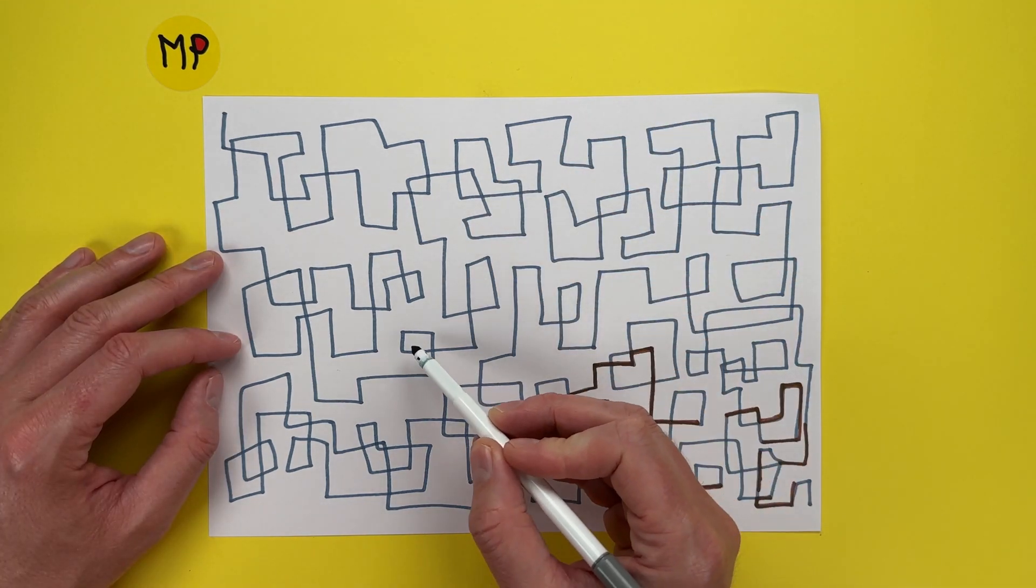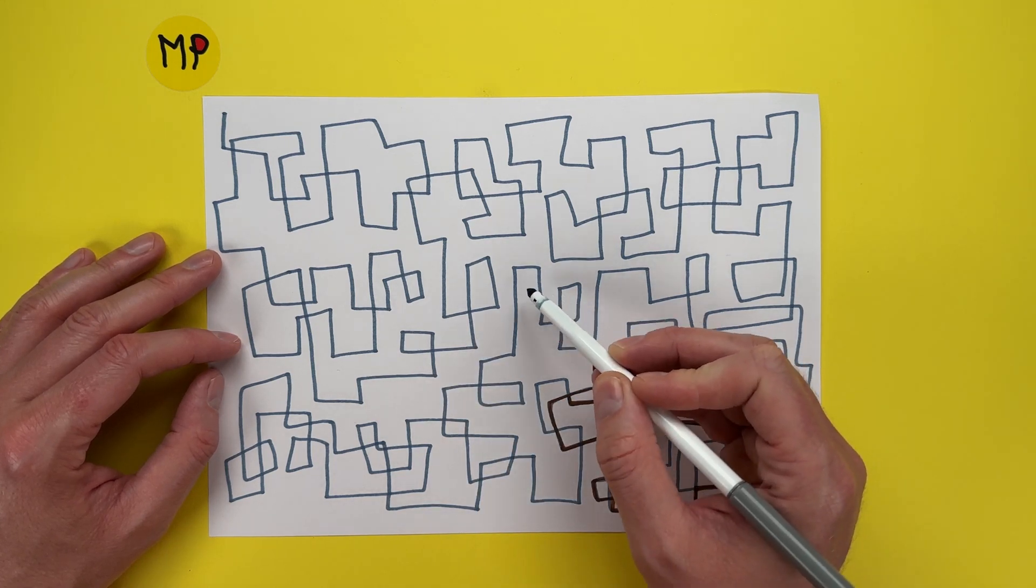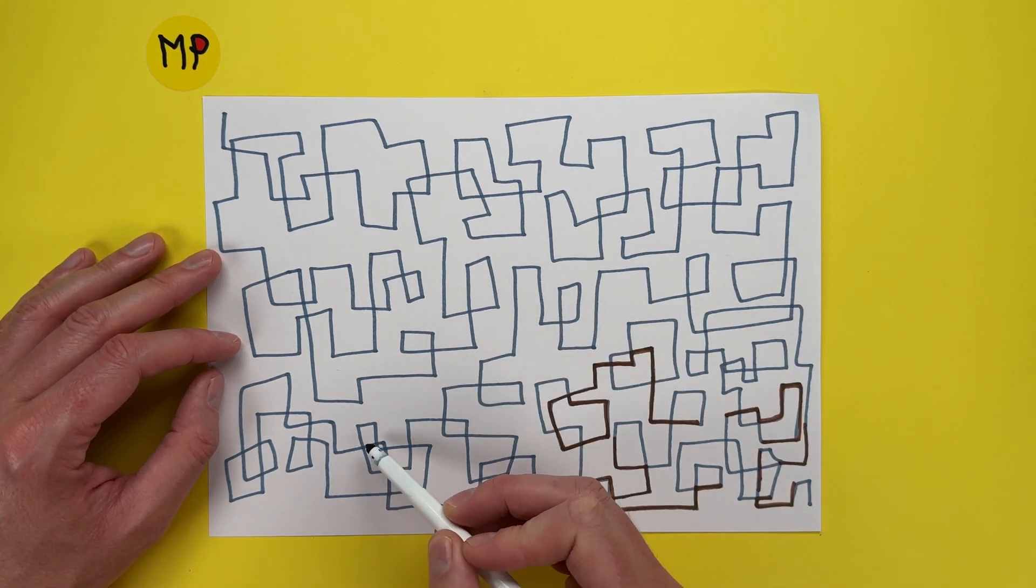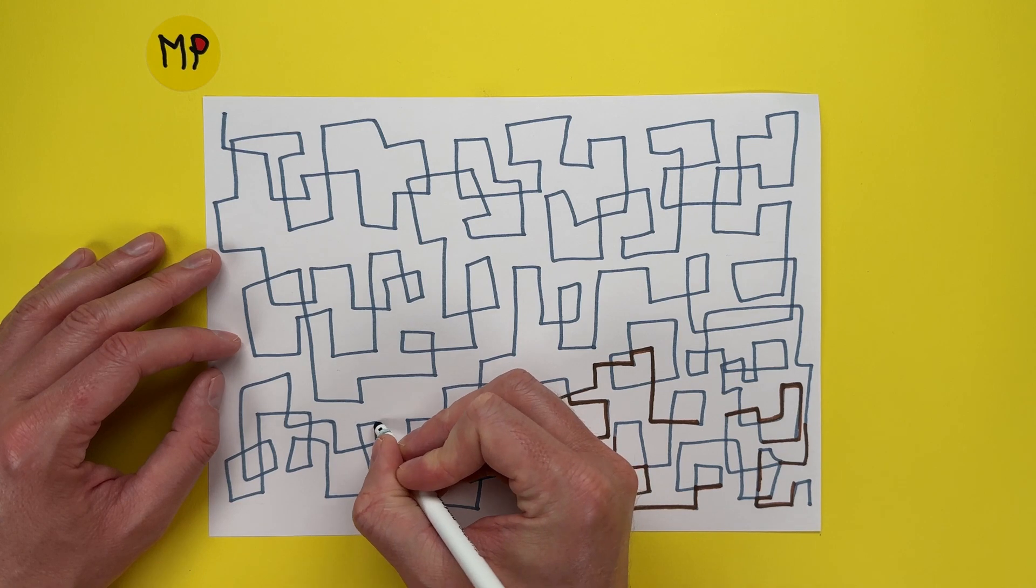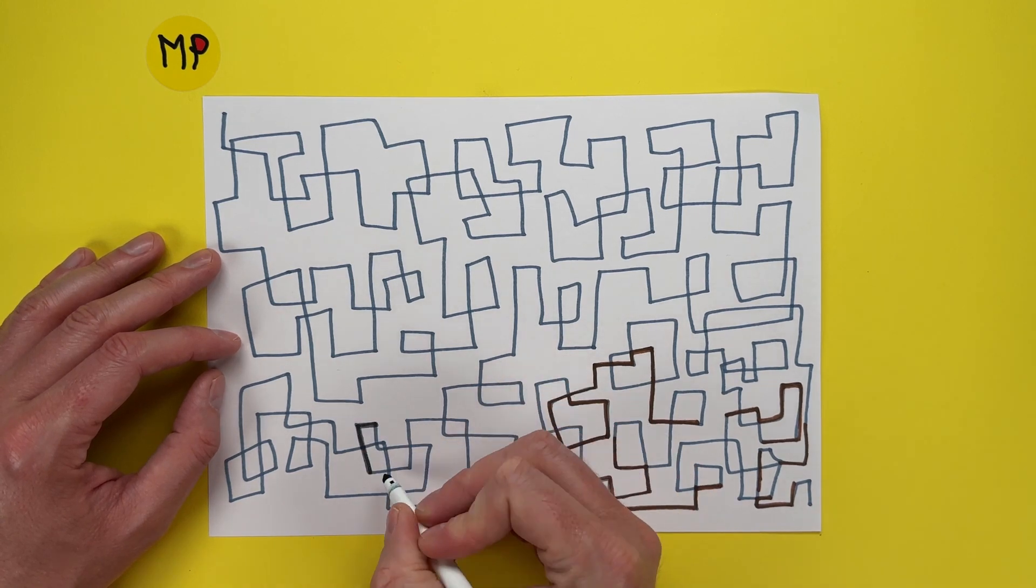Now I can sort of see something here. There's an arm there maybe. There's an arm there. That looks like a foot to me. So I'm going to go over.